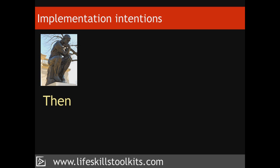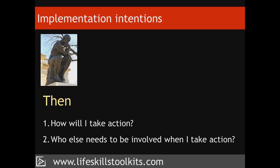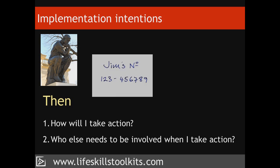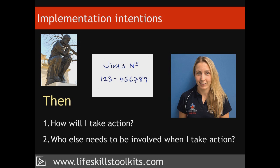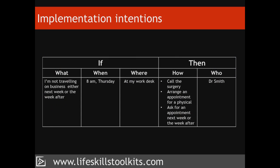With regard to the then, ask yourself: How will I take action? And who else needs to be involved when I take action? Again, be as specific as you can — know exactly how you will take action and who else might be involved. When you first start creating implementation intentions, you might want to use and complete a table such as the one found in the prompt sheet, to check if your answers are specific enough when addressing each of the if and then questions.